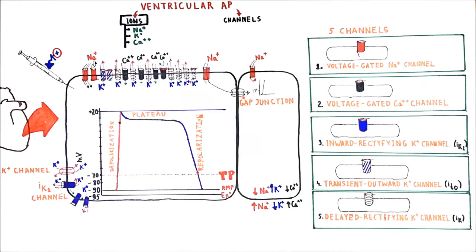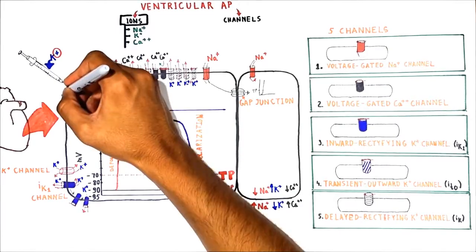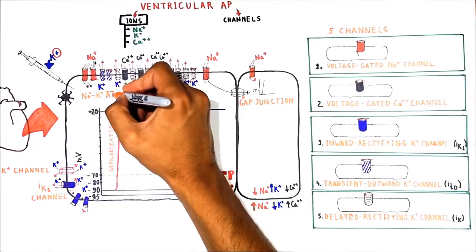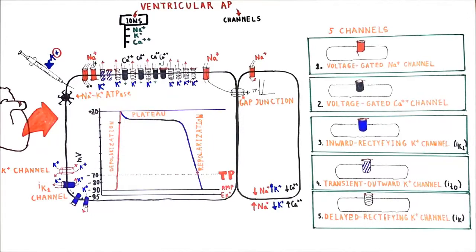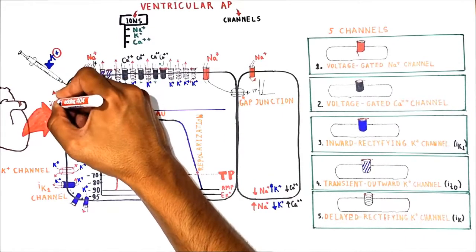In order to reestablish the resting membrane potential, the cell must pump sodium out and return potassium back into the cell. For this purpose, there are many sodium-potassium ATPase pumps on the surface of the membrane. These sodium-potassium ATPase pumps transport three sodium ions out and two potassium ions into the cell.